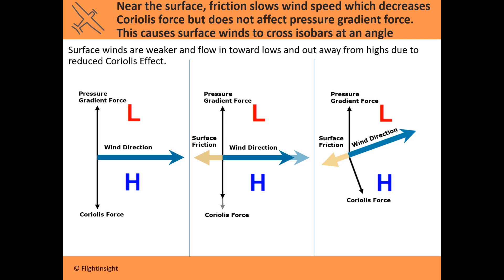If you add surface friction, you're slowing the wind speed down — not the force, but the actual wind speed. If the wind speed decreases, the Coriolis effect isn't going to have as great an effect on the wind. The faster the wind, the more the spinning Earth causes deflection. So a slower wind speed means a smaller Coriolis force, which means the pressure gradient starts to win out again. That causes the wind to veer away from the high-pressure system and inward towards the low-pressure system. These are the three factors that determine how fast the wind blows and what direction it comes from.